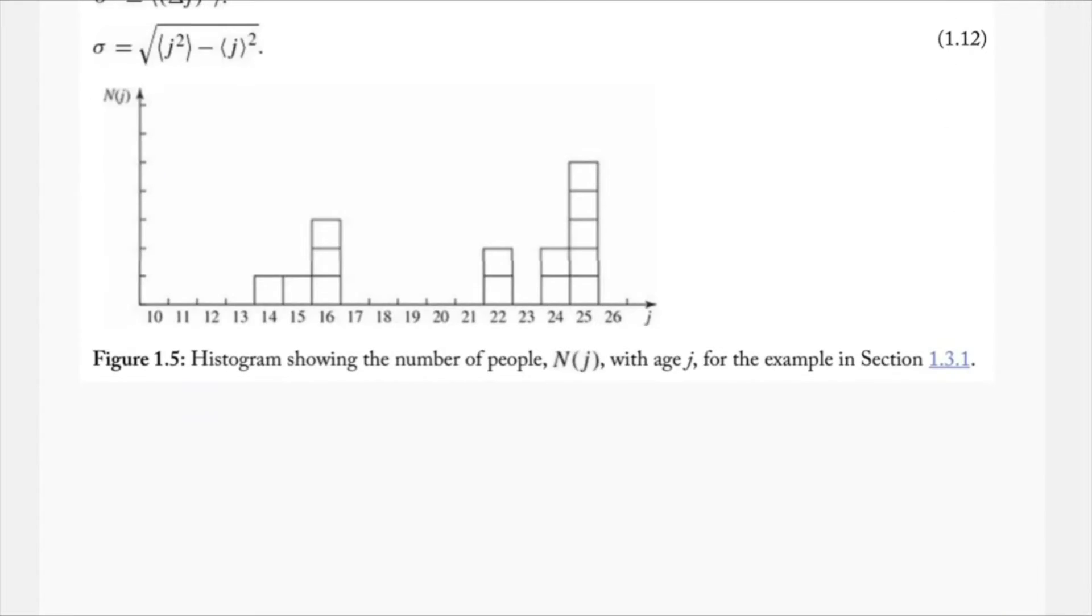So looking at the histogram, really we just want to understand what's going on here. So our y-axis, n of j, that's just the number of people with each particular age, with each given age. Each of the ages is the j value on the x-axis. So 14 years old, 15 years old, 16 years old, and so on.